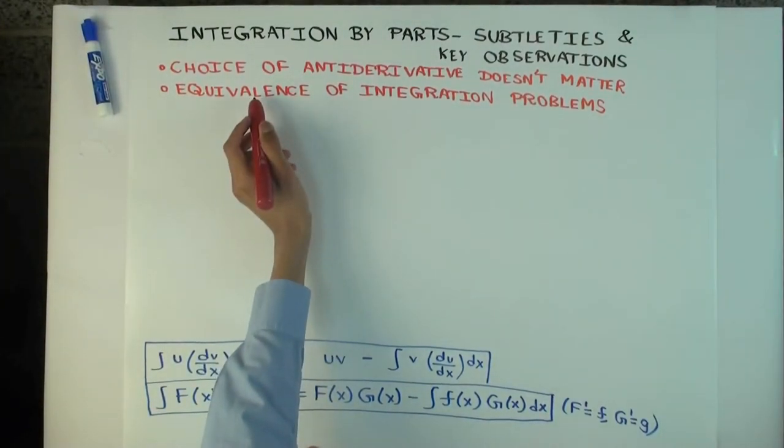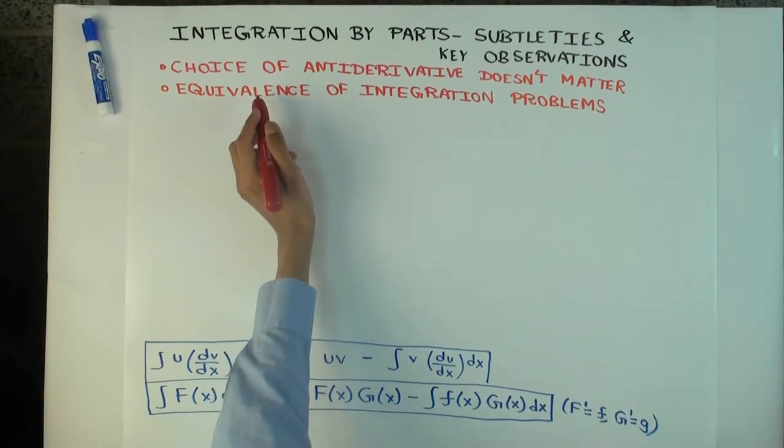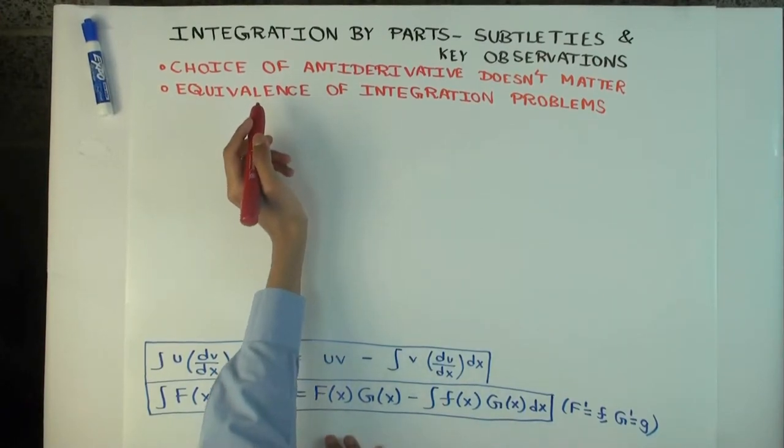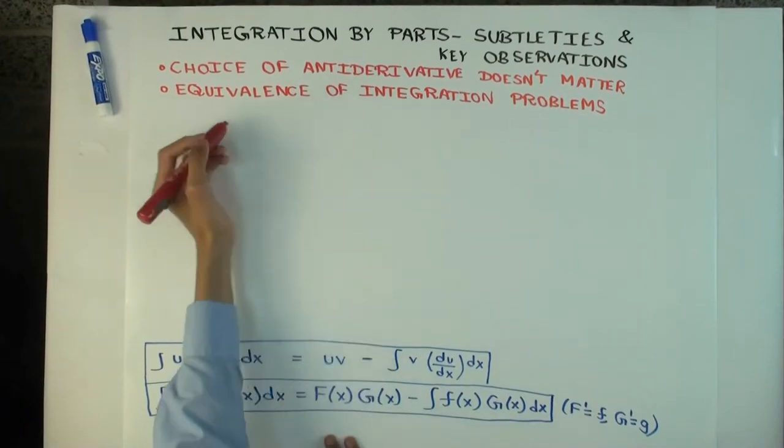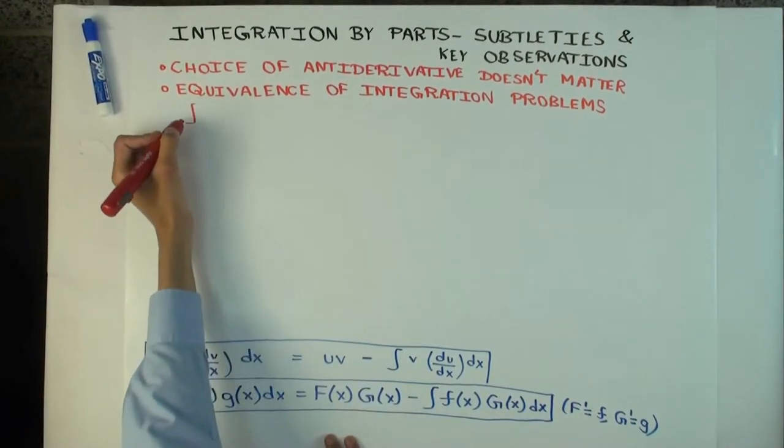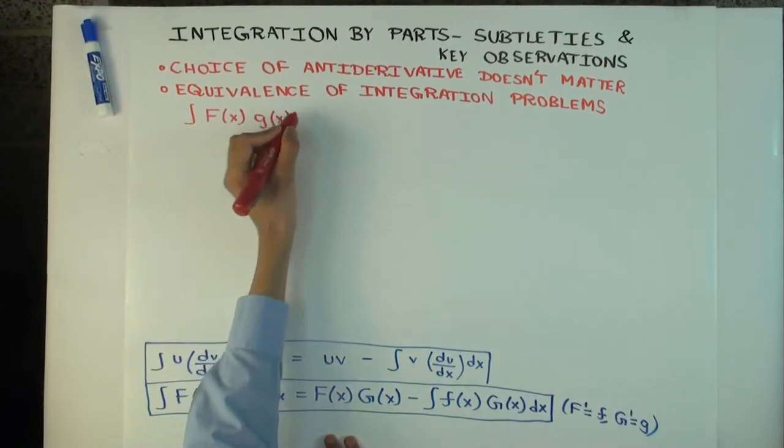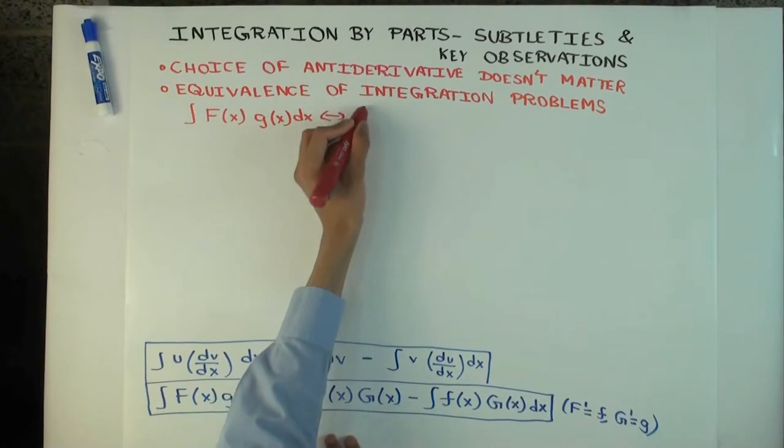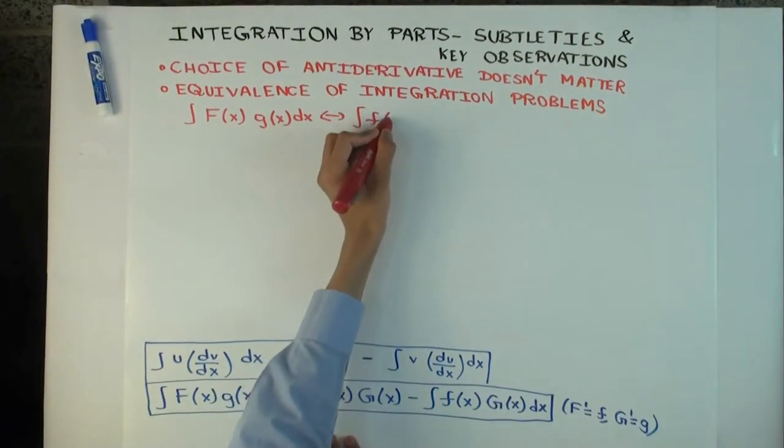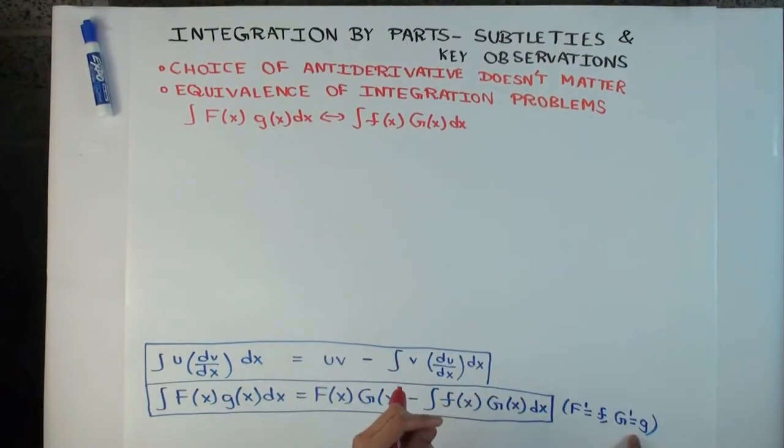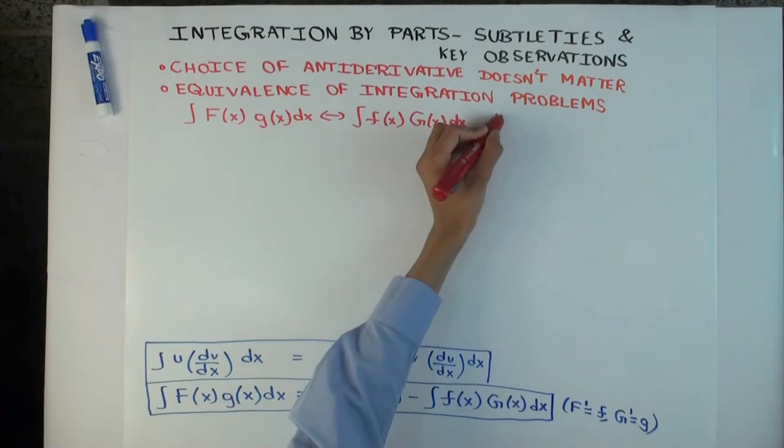Okay. So the next thing I want to touch upon is the equivalence of integration problems. So what do I mean by that? Well, integration by parts doesn't always solve an integration problem, but it does tell you a relationship between two integration problems. So what is it telling you? Well, it's telling you that these two integration problems are equivalent, where, going back here, I'll just write down, where F prime is f, the derivative of each capital thing is the corresponding small thing.